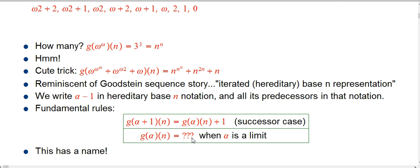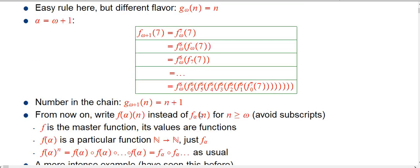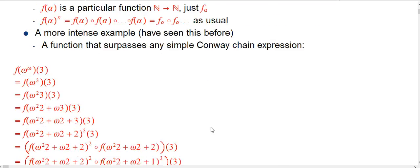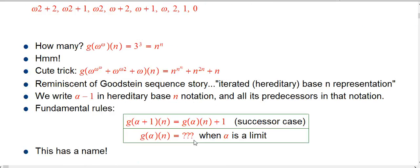What about when alpha is a limit? That's maybe even simpler — it's our absolute universal thing. For example, g sub k of n was k, and the way limits always work is if this is a limit ordinal, you just replace it with the appropriate member of its fundamental sequence, and it's as if that's the problem you actually posed. There's no manipulation, no calculation, no algebra — it's just a substitution. So that limit ordinal just becomes g of the nth number in the fundamental sequence applied to n.